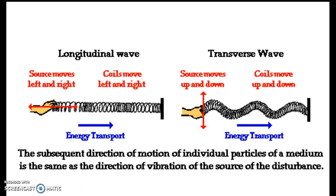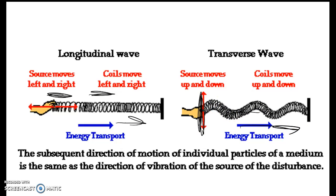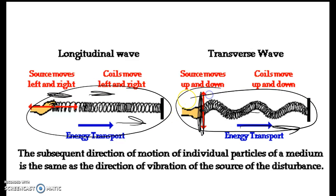Let's look at longitudinal and transverse waves once again. In a longitudinal wave, as the source moves left to right, the coils move left and right, and energy is transported left to right — parallel. If the source moves up and down, the coils move up and down, but the energy goes perpendicular — that's a transverse wave. Transverse is perpendicular, longitudinal is parallel. You can see the examples with slinkies, and hopefully in the slinky simulation you saw both when you manipulated your slinky.